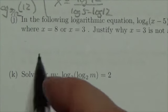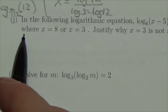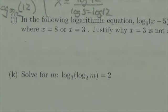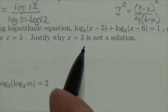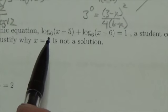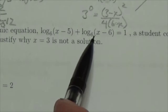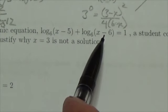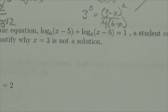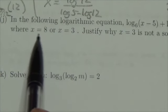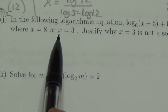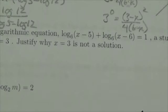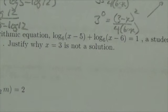This question says that in the following logarithmic equation — log base 6 of (x minus 5) plus log base 6 of (x minus 6) equals 1 — a student comes up with the solutions x equals 8 and x equals 3. We're supposed to explain why 3 does not work as a solution, and it's pretty simple to explain.